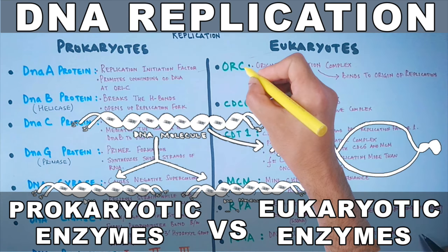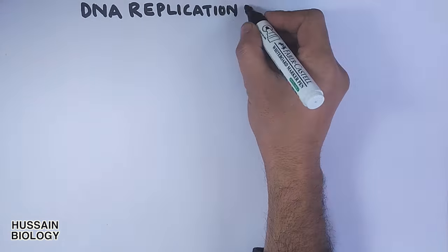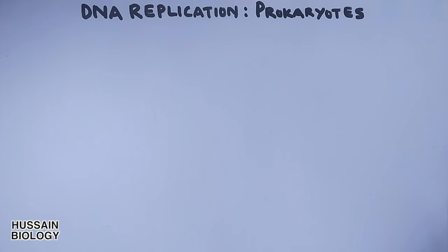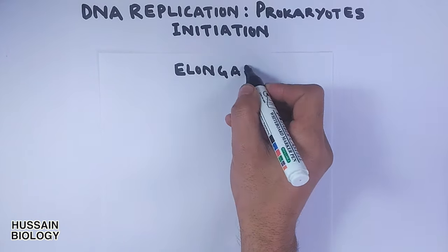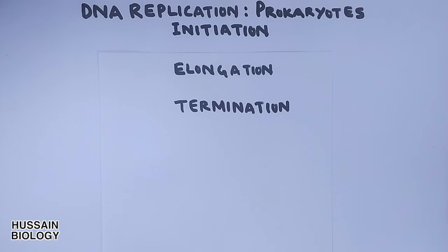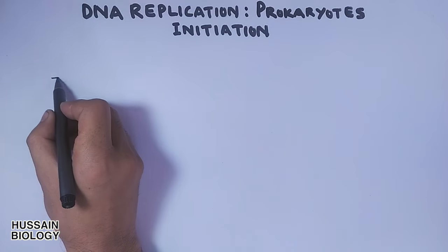In the previous video we discussed the enzymes involved in DNA replication. If you want to watch that video first, you can click the link above or find it in the description. In this video we'll be discussing DNA replication in prokaryotes, explaining its initiation in detail. We know DNA replication proceeds in three steps: initiation, elongation, and termination. Here we'll focus on the initiation part.